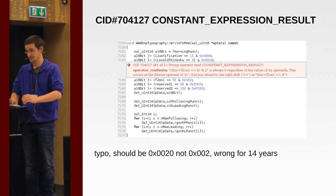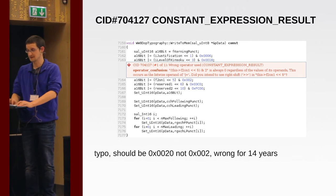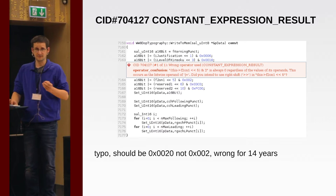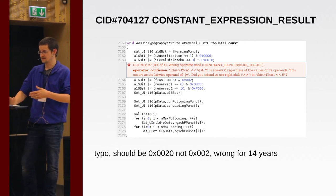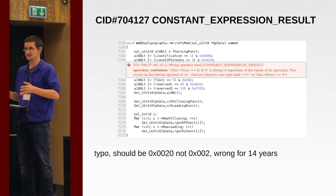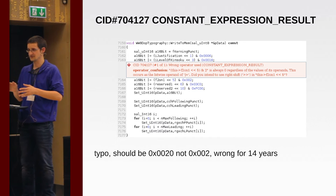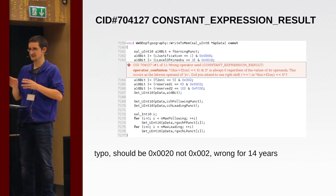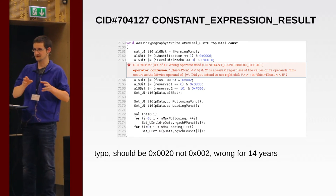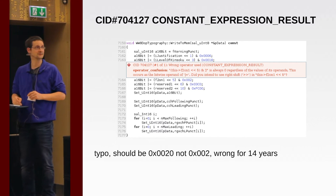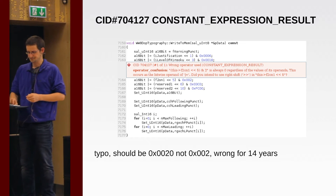Coverity does find real problems, but it often finds lots of other things that are not problems, so you get a huge amount of noise. Especially for us in LibreOffice, when we'd refactor something, items we'd marked as false positives would return because the code changed sufficiently that it was no longer seen as a duplicate of the previously marked false positive bug. So in general, our list to ignore is massively long.